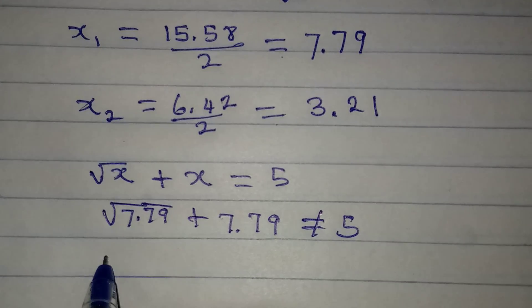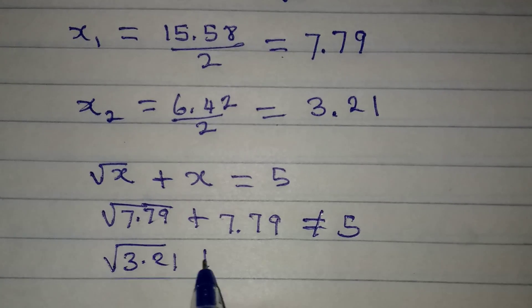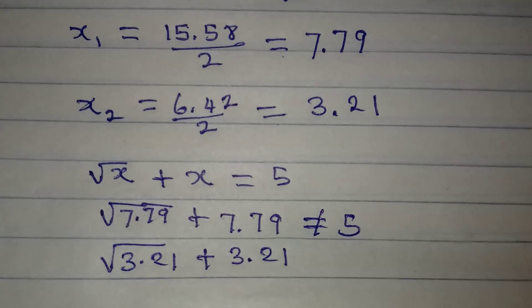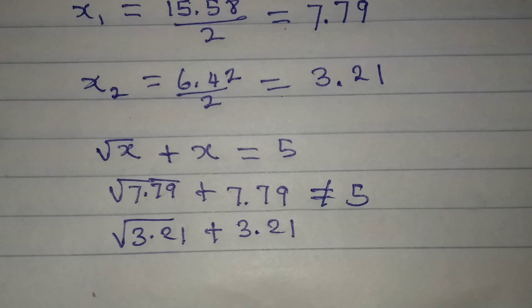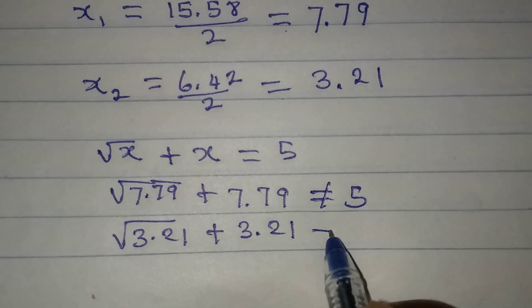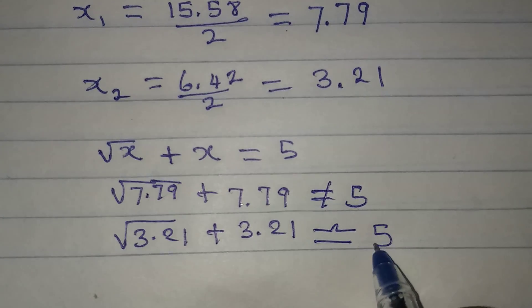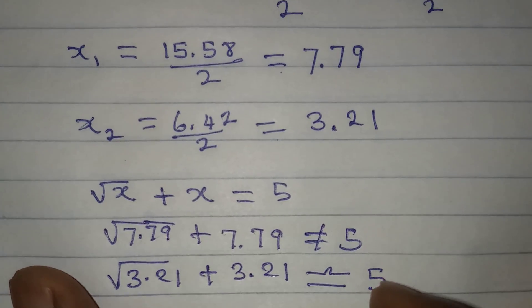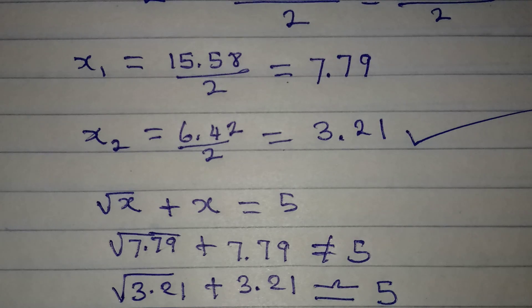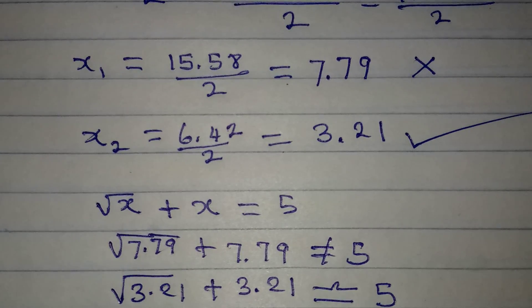But then let's try the other one. Square root of 3.21 plus 3.21, can this be approximately equal to 5? Let me give you a try and we are very correct because this is approximately equal to 5. So it is our second solution which is this that satisfies the equation, and the first failed to satisfy. Thank you for watching.